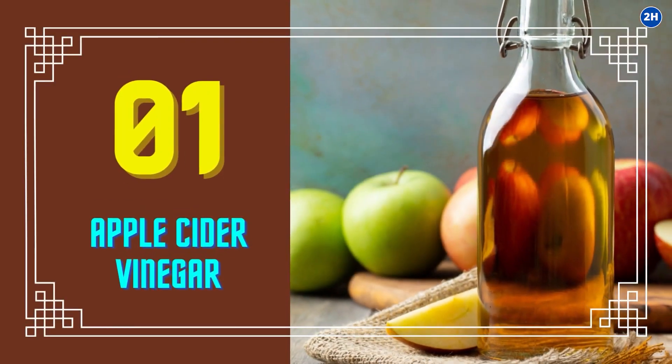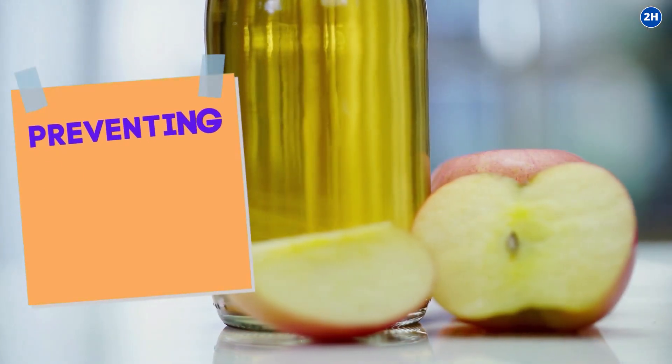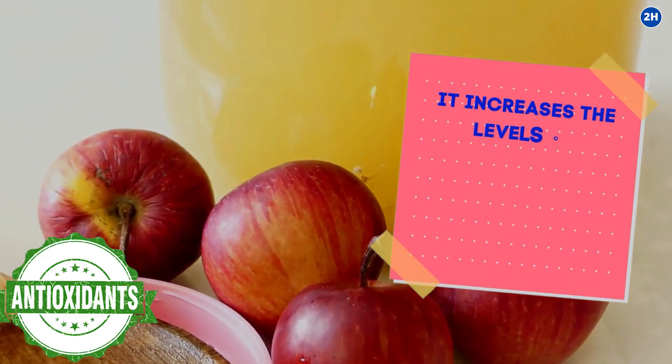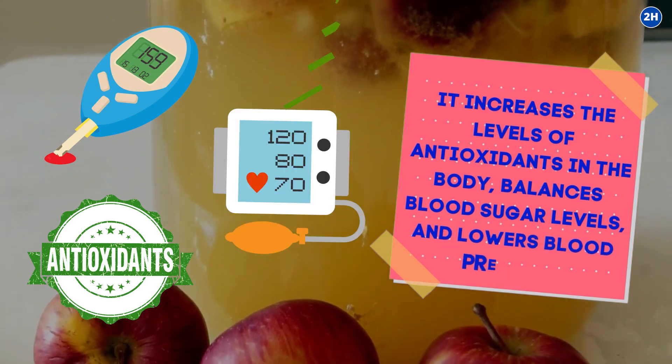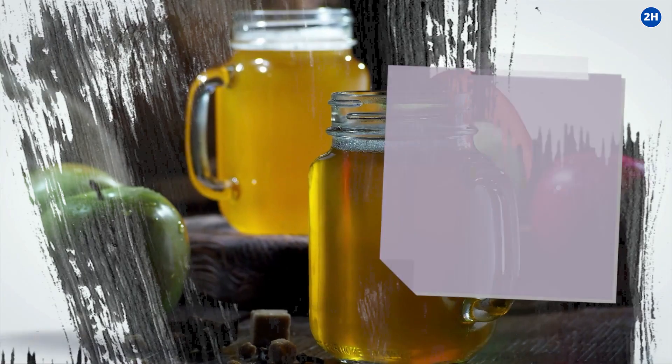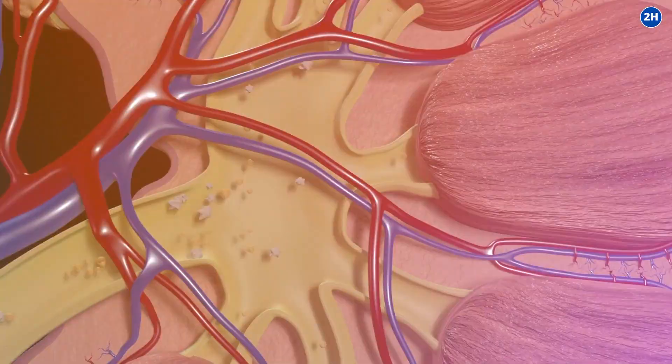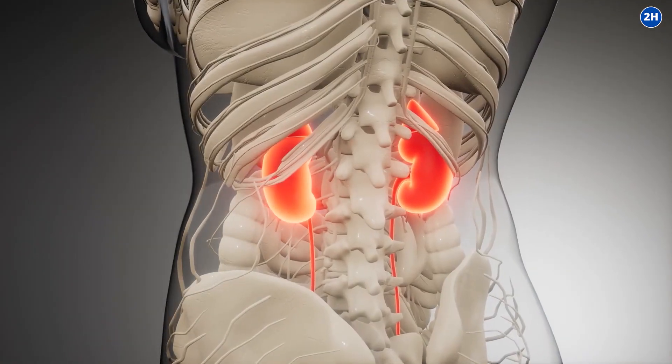1. Apple Cider Vinegar. Apple cider vinegar is beneficial in preventing oxidative stress on the kidneys. It increases the levels of antioxidants in the body, balances blood sugar levels, and lowers blood pressure, creating the best conditions for kidney health. Apple cider vinegar has citric acid, which dissolves kidney stones. Repeated use of apple cider vinegar also flushes out toxins from the kidneys.